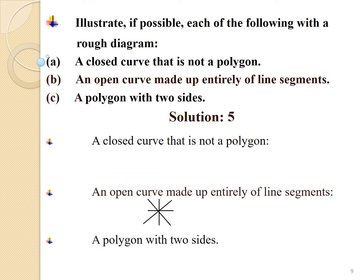Question number 5: Illustrate, if possible, each of the following with a rough diagram. In this question, we have to draw the figure, if possible, for each of the given parts, keeping in mind the definition of polygon and all its three conditions. Answer A: The below figure is a closed curve but not a polygon, because it has a curved line. Answer B: The below figure is an open curve, entirely made up of line segments.